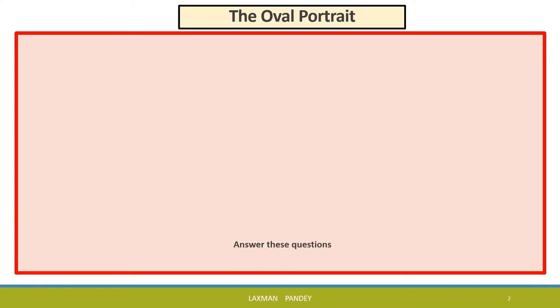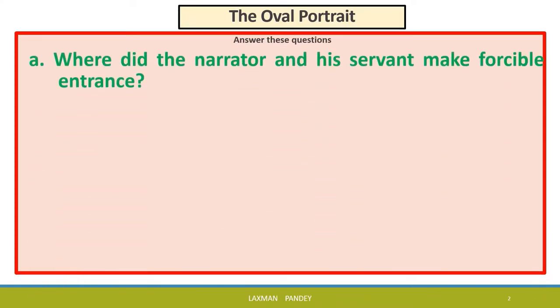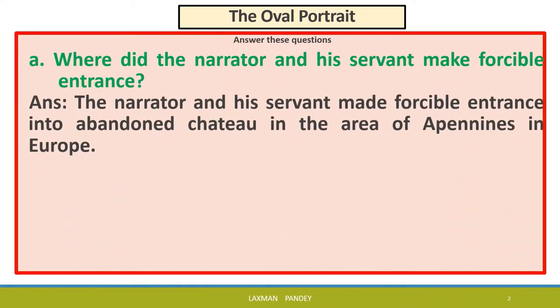The Oval Portrait. First of all, answer these questions. Number one: where did the narrator and his servant make forcible entrance? The narrator and his servant made forcible entrance into an abandoned chateau in the area of the Apennines in Europe.